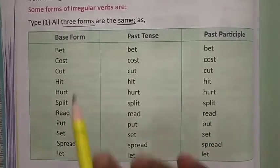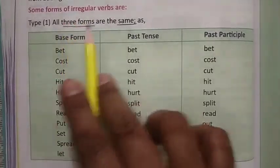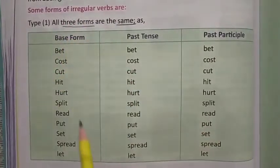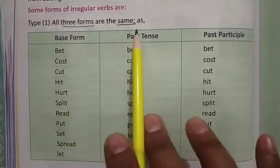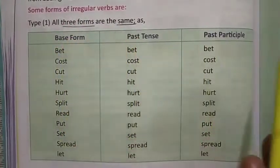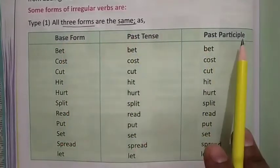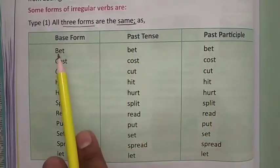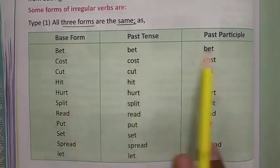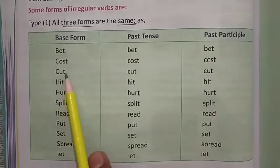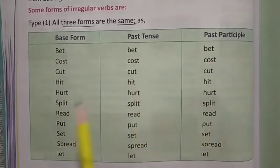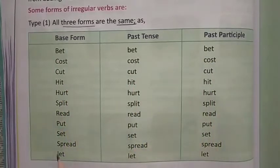Some forms of irregular verbs have all three forms the same — base form, past tense, and past participle. For example: bet, bet, bet; cut, cut, cut; split, split, split; spread, spread, spread.